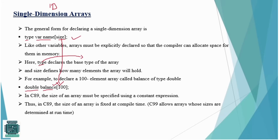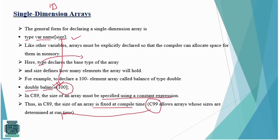In the C89 version, the size of an array must be specified using a constant expression, meaning the size of an array is fixed at compile time. But in C99, the size is determined at run time.